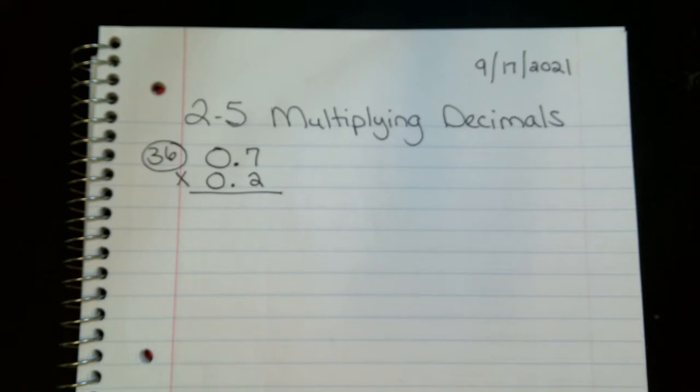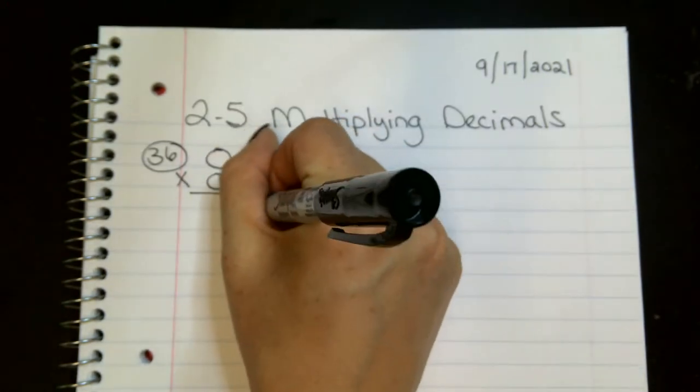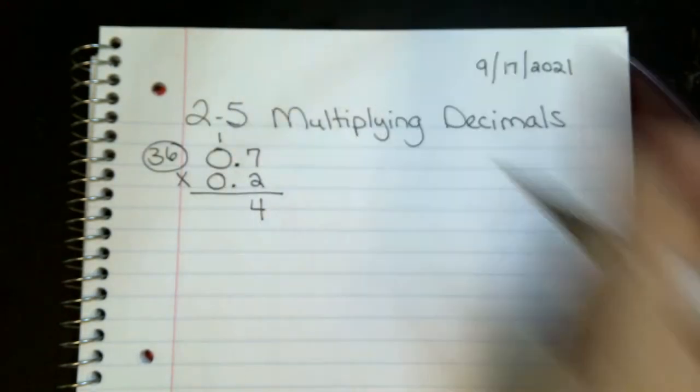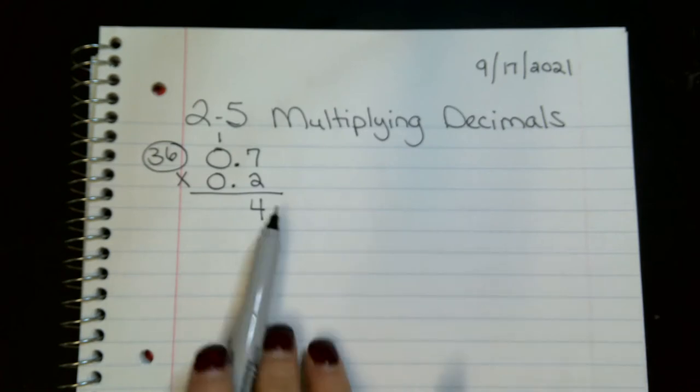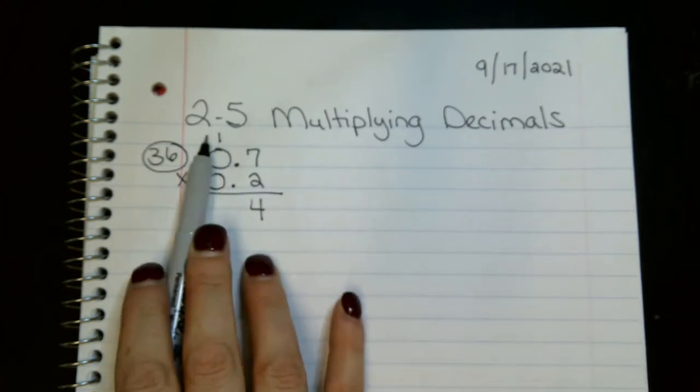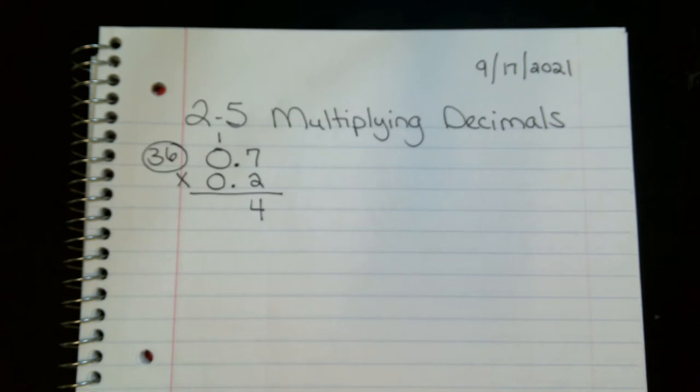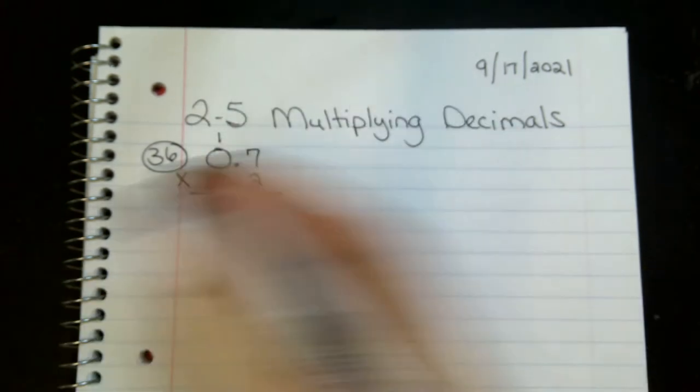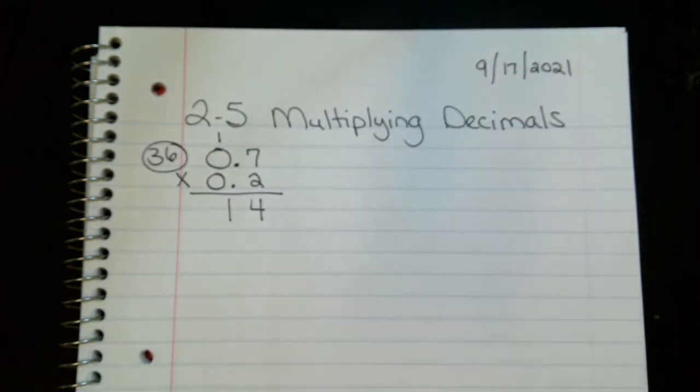All right, guys, what's 2 times 7? 14. I write my 4 and carry my 1 there. And then I don't really need to do much else, but what's 2 times 0? 0, Caden, plus 1 is what? 1. And so, I don't really need to cross anything out because those are 0s and it's just going to be 0s across the board.